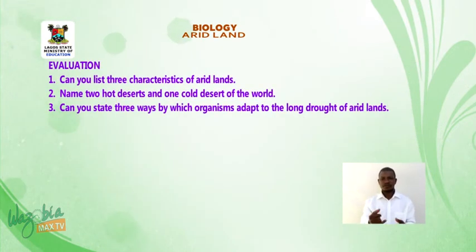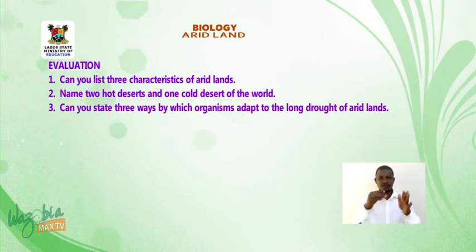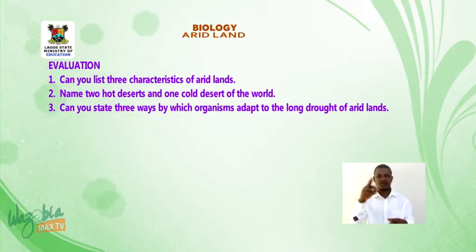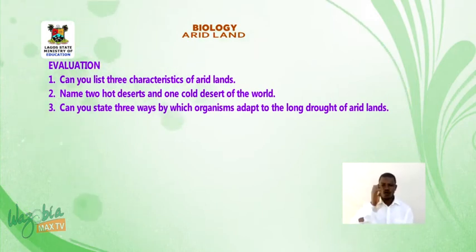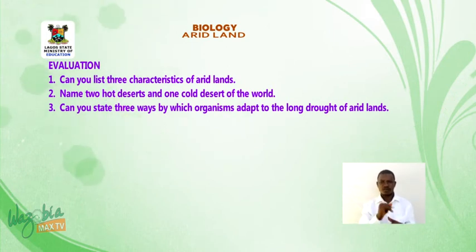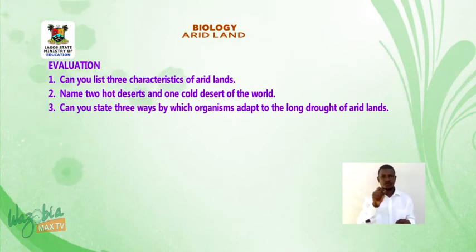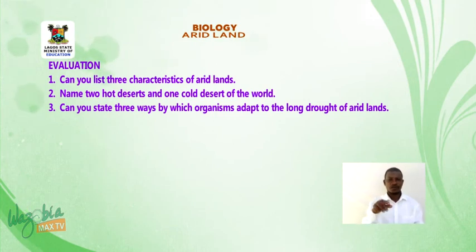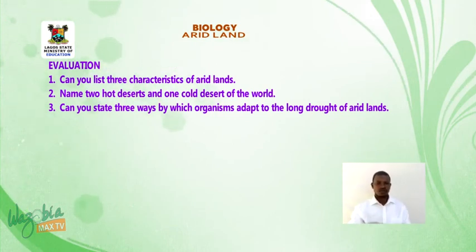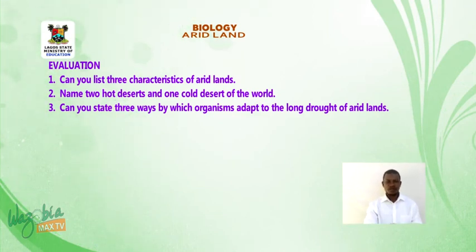Now students, can we evaluate ourselves? One, can you list three characteristics of arid lands? Two, name two hot deserts and one cold desert of the world. Three, can you state three ways by which organisms adapt to the long drought of arid lands?